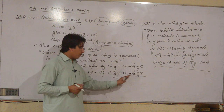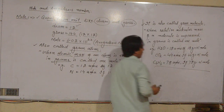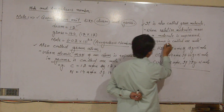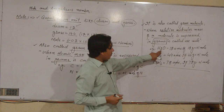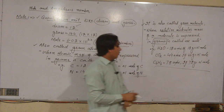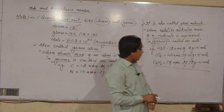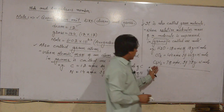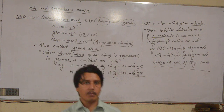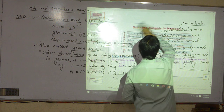Nitrogen has relative atomic mass 14 amu, so 14 grams equals one mole of nitrogen. Third fact: the mole is also called gram molecule. When the relative molecular mass of a molecule is expressed in grams — for example, water has molecular mass 18 amu, so 18 grams represents one mole. Carbon dioxide is 44 amu so 44 grams equals one mole. Benzene has relative molecular mass 78 amu, so 78 grams equals one mole of benzene.